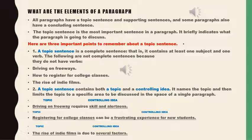Pay attention: the topic sentence has some important points to remember. Number one, each topic sentence is a complete sentence. A complete sentence must have at least one subject and one verb and give a complete meaning. For example, if I say 'driving on freeways' — where is the verb? We don't have one. 'Driving' is a gerund, which is a noun, not a verb.